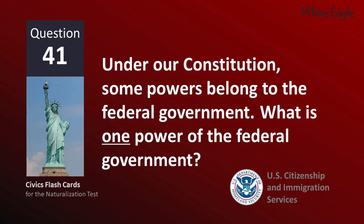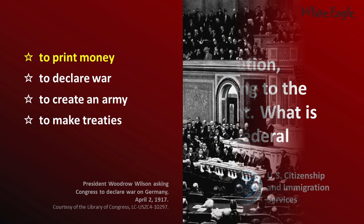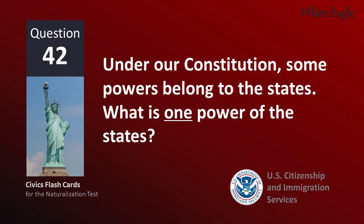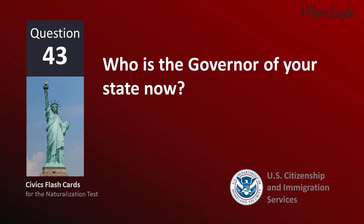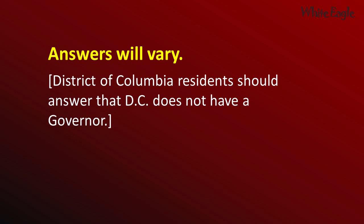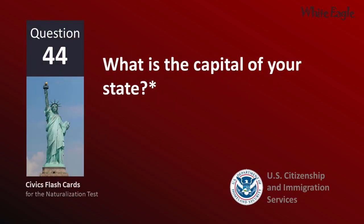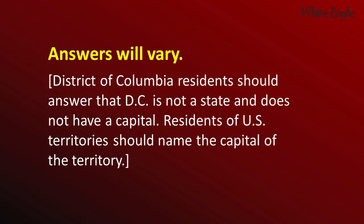Under our Constitution, some powers belong to the federal government. What is one power of the federal government? To print money. Under our Constitution, some powers belong to the states. What is one power of the states? Give a driver's license. Who is the Governor of your state now? Answers will vary. District of Columbia residents should answer that D.C. does not have a governor. What is the capital of your state? Answers will vary. District of Columbia residents should answer that D.C. is not a state and does not have a capital. Residents of U.S. territories should name the capital of the territory.